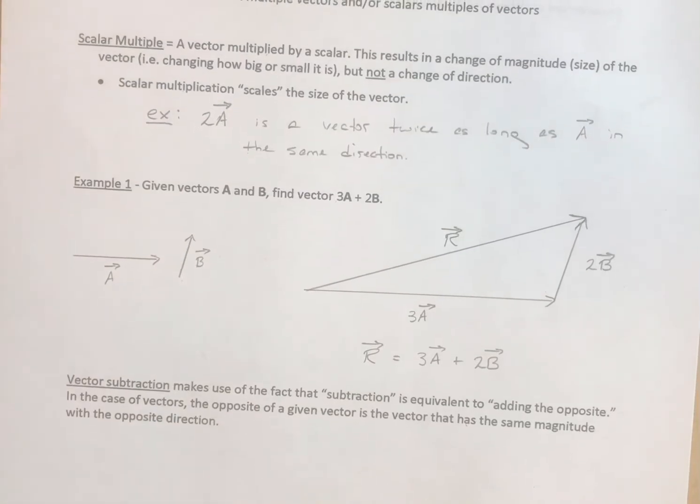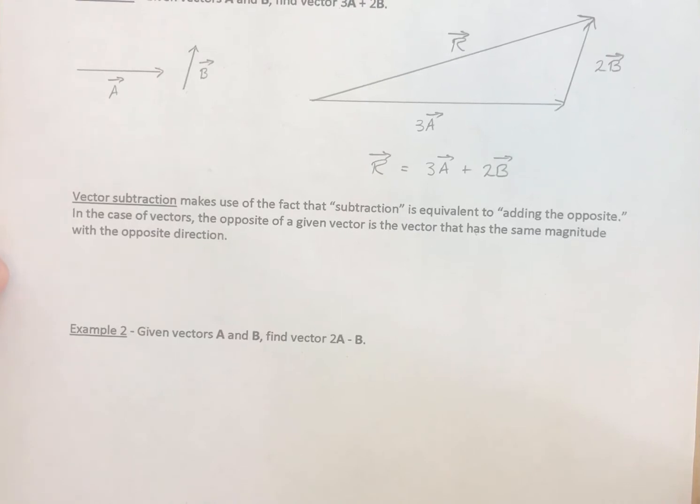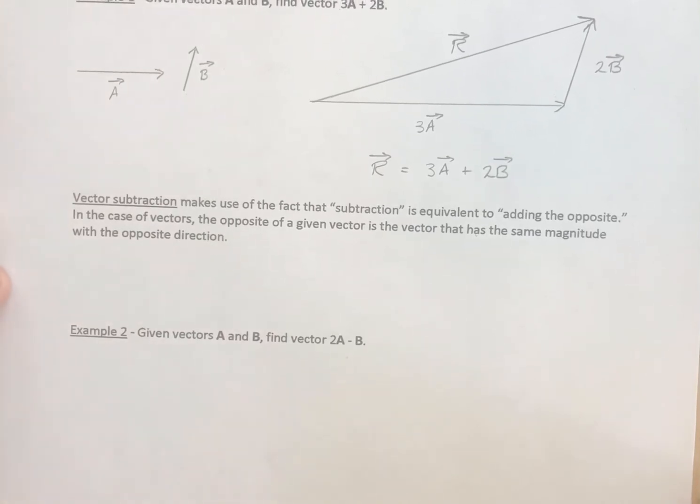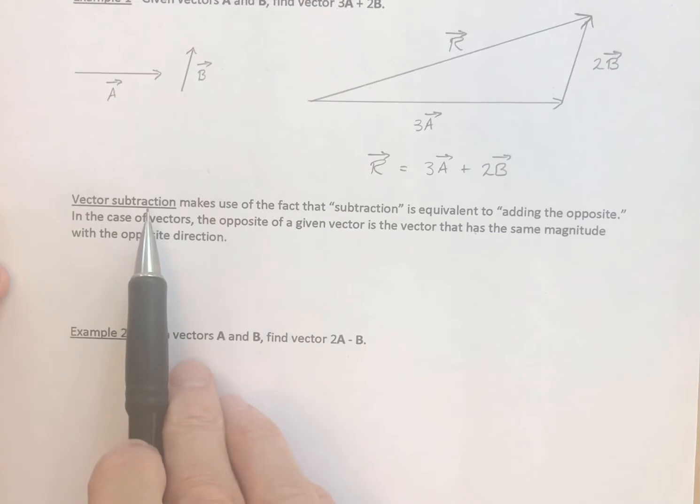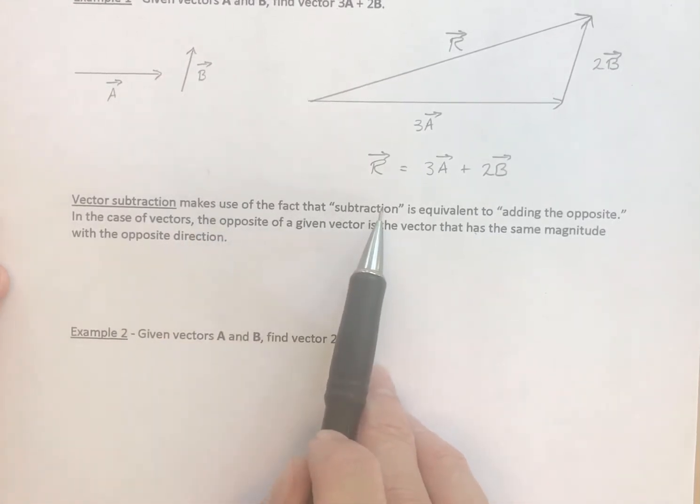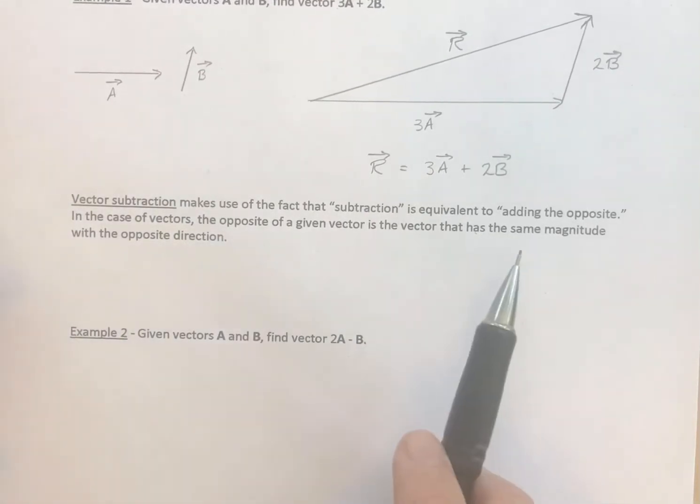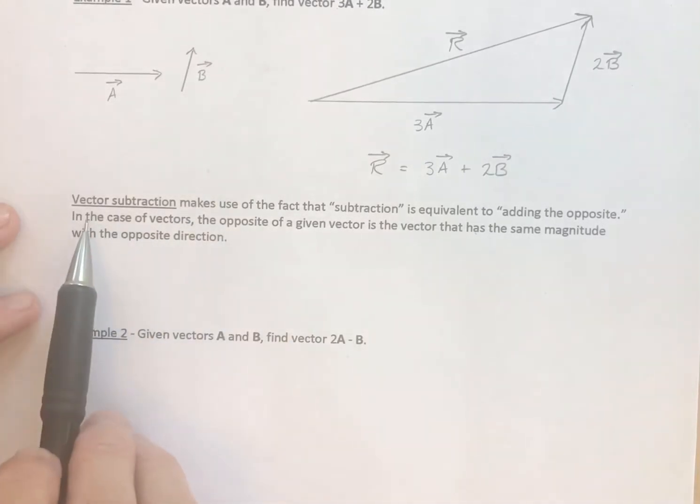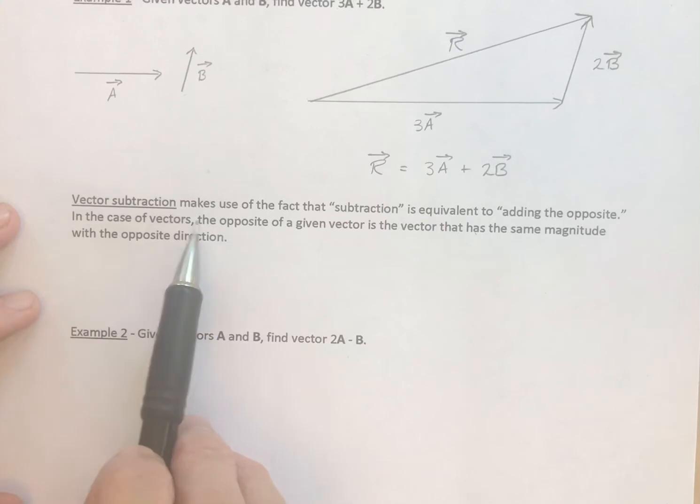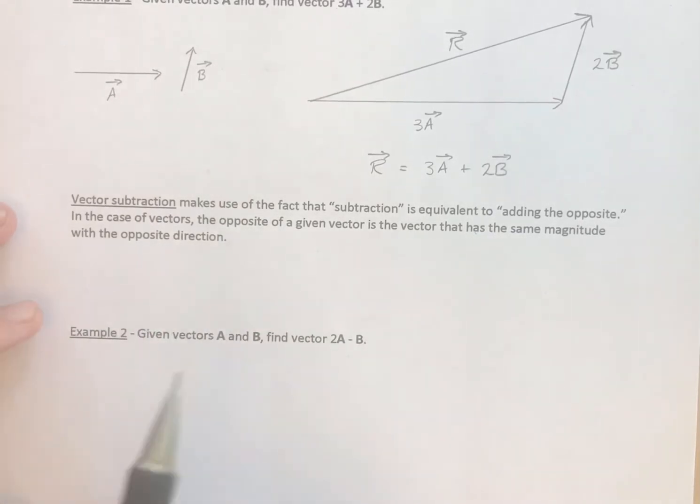Now let's talk about subtraction. Vector subtraction makes use of the fact that subtraction is equivalent to adding the opposite. Now, in the case of vectors, the opposite of a given vector is the vector that has the same magnitude with the opposite direction.